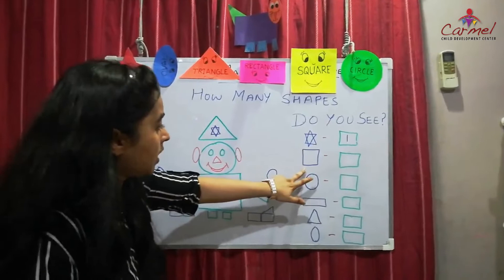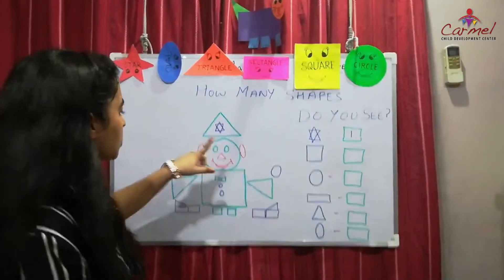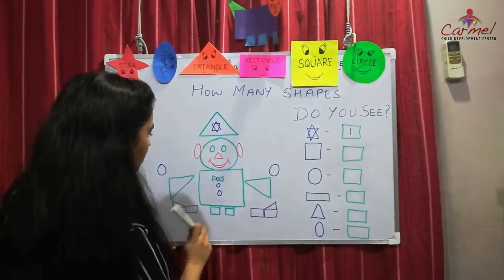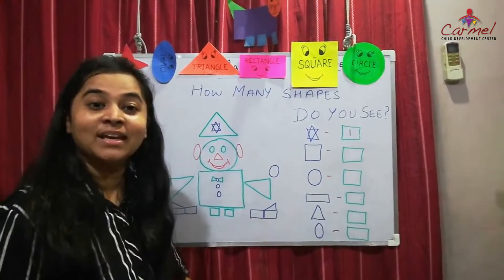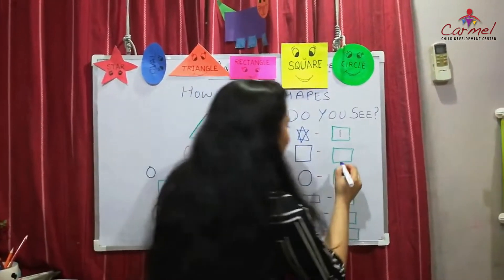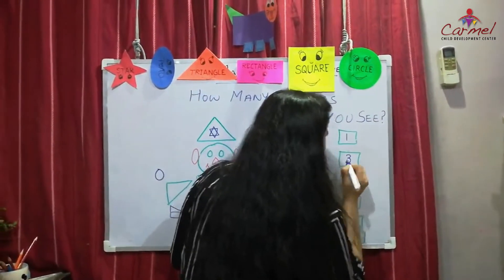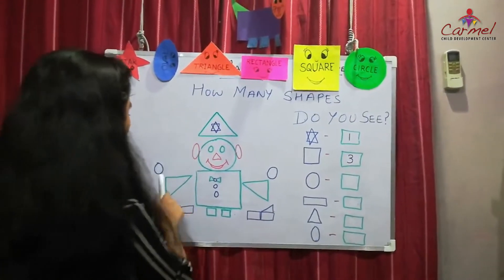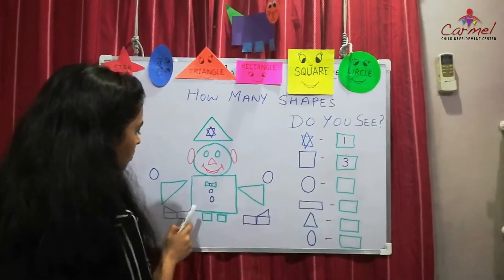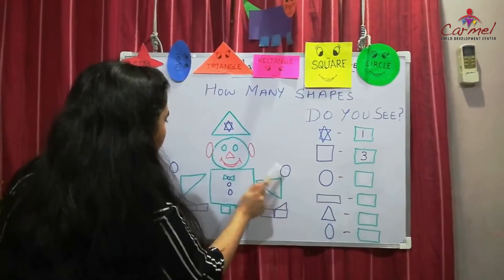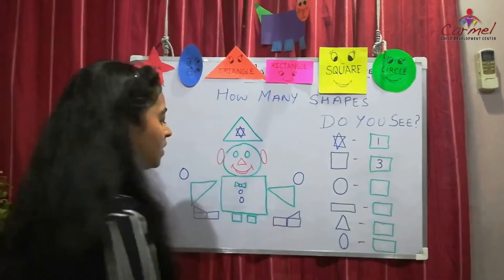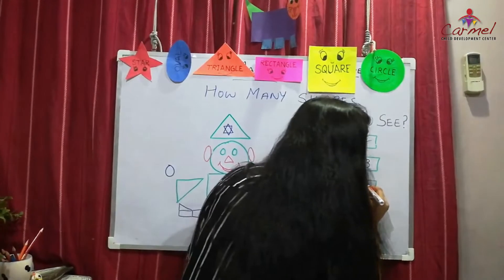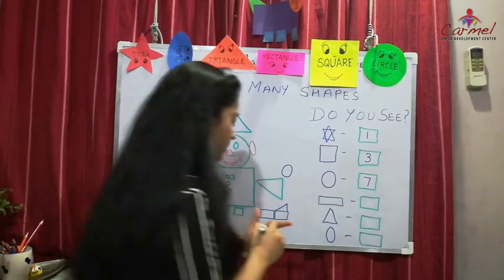Now the second shape — the square. How many squares are there? Let's count: one, two, three. There are 3 squares. Now let's count how many circles are there: one, two, three, four, five, six, seven. There are 7 circles.